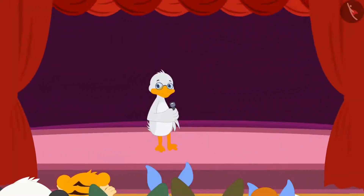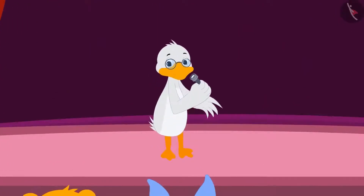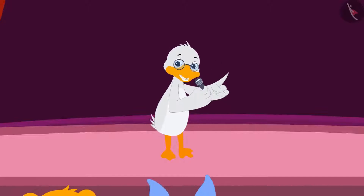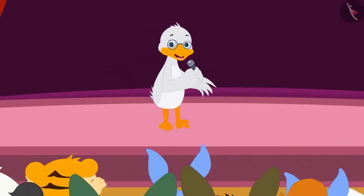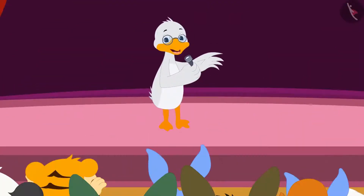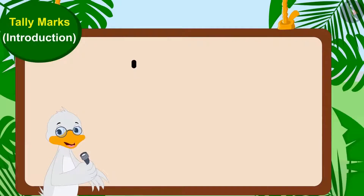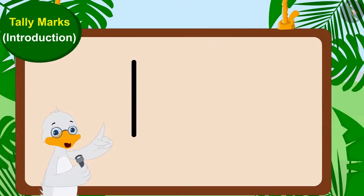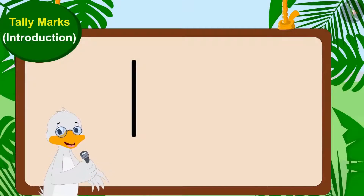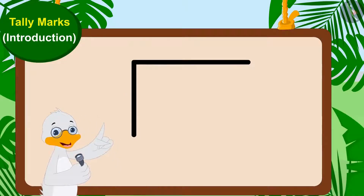Badbole Uncle, the host of the competition, told the audience: The names of all the contestants have been written on the board placed near the stage. You can vote for the contestant whose costume you liked the most. Draw a vertical line, like this, for the first vote. For the second vote, create a horizontal line in this way.